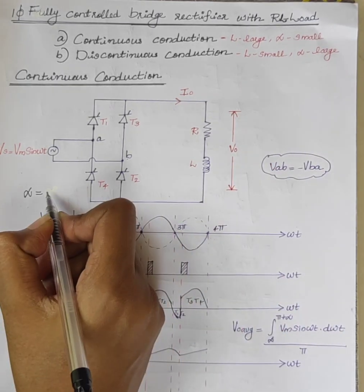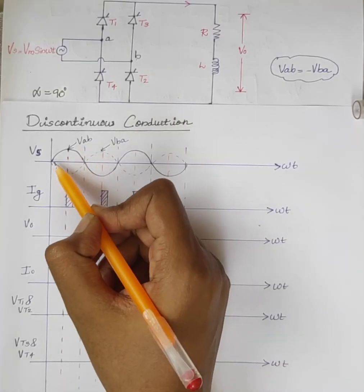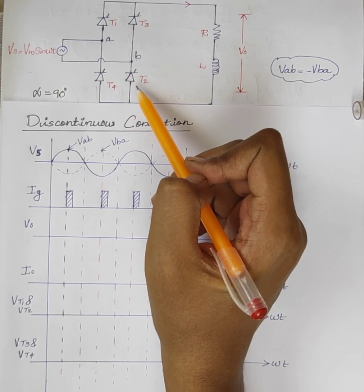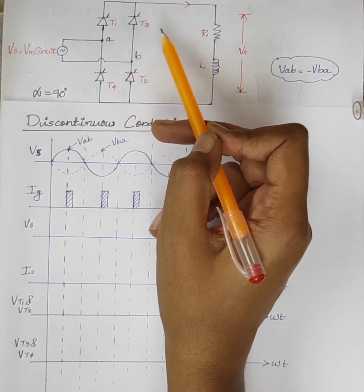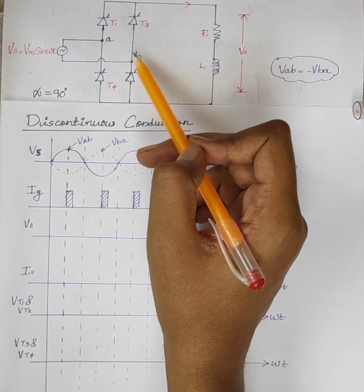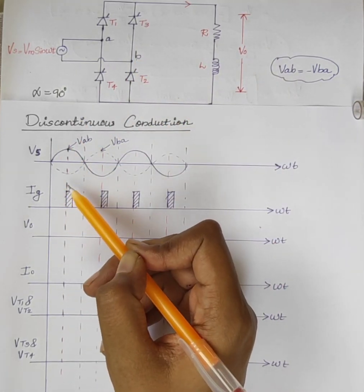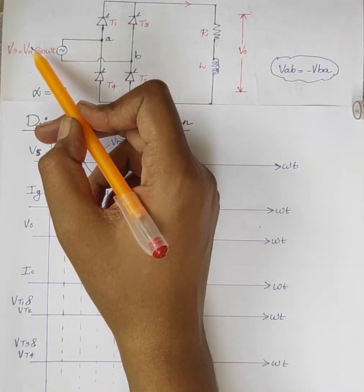Suppose alpha is equal to 90 degrees. During the positive half cycle, thyristors T1 and T2 are forward biased and T3 and T4 are reverse biased. At alpha equals 90 degrees, we are giving gate pulses to T1 and T2, so the supply voltage Vs appears across the RL load.